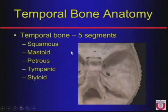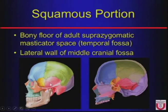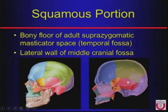The temporal bone has five different important segments, and we'll go through each of these and look at their important anatomy and what's at each location. First we have the squamous portion — here in pink — which is the lateral part of the superzygomatic masticator space. Remember that the masticator space has an infratemporal fossa or nasopharyngeal portion below the zygomatic arch, and then a temporal fossa or superzygomatic part that goes up over the lateral skull. On the inside of the skull we can see that lateral portion right there. That's the squamous portion of the temporal bone.